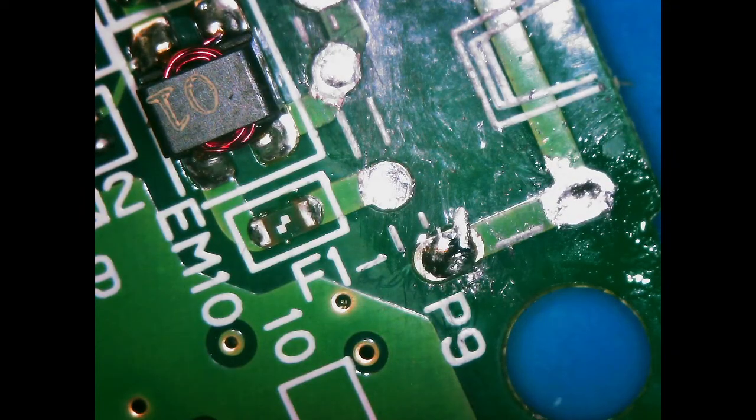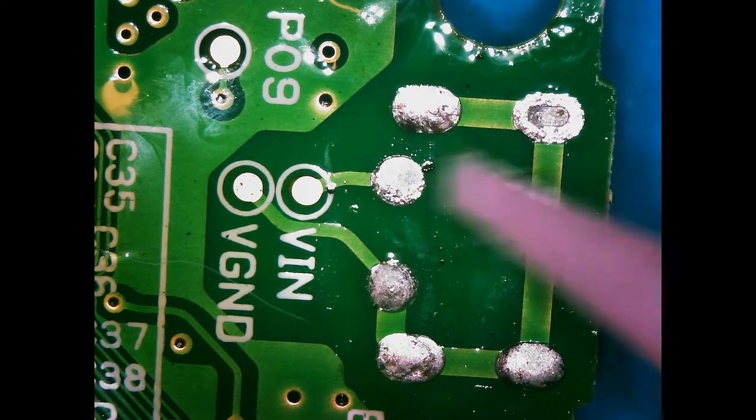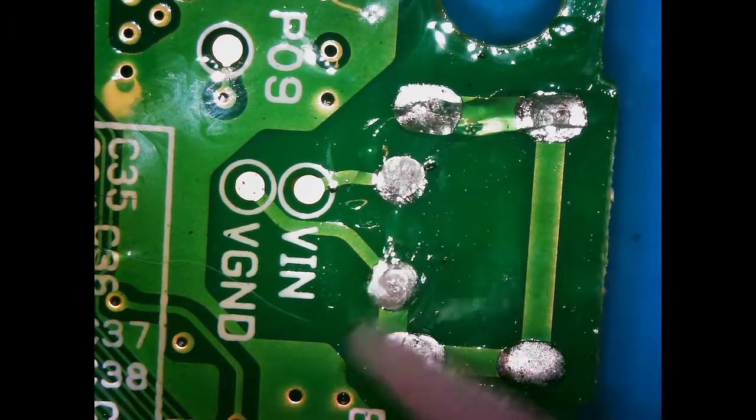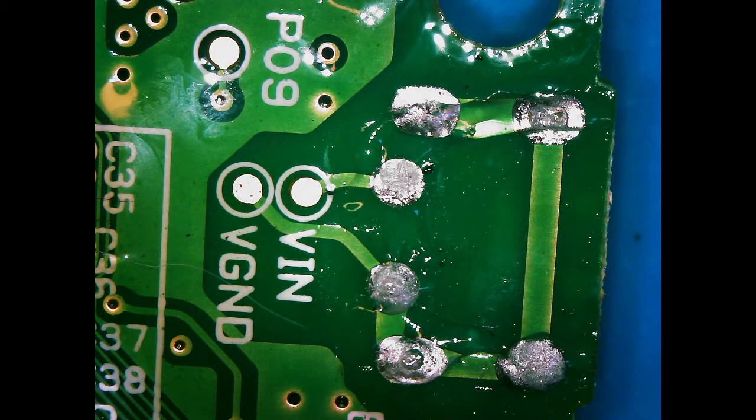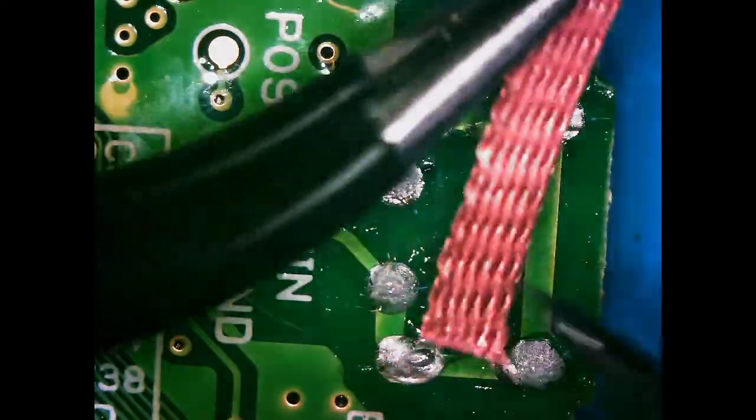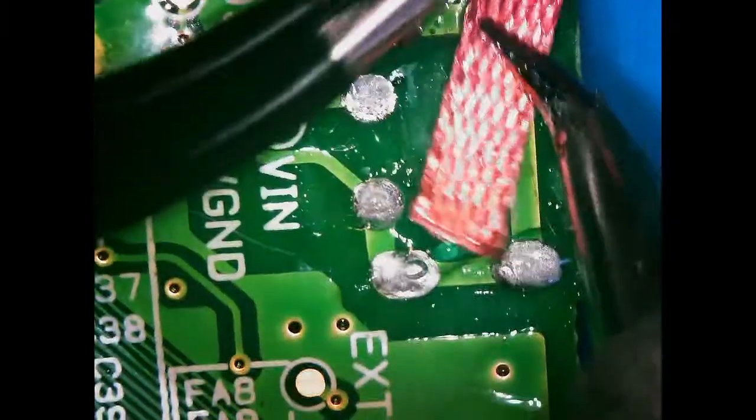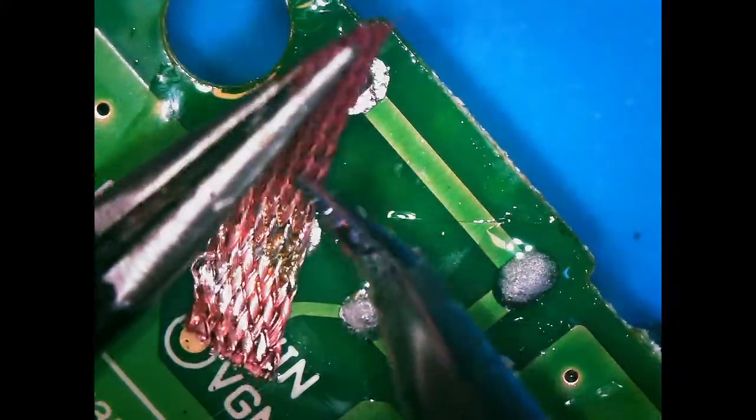I'm going to flip it over and then we're going to do the other side with some better wick. I'm going to add some flux. And then let's use this higher quality wick to hopefully get the remainder of that out. Just got to get those holes cleared out. That's magical.